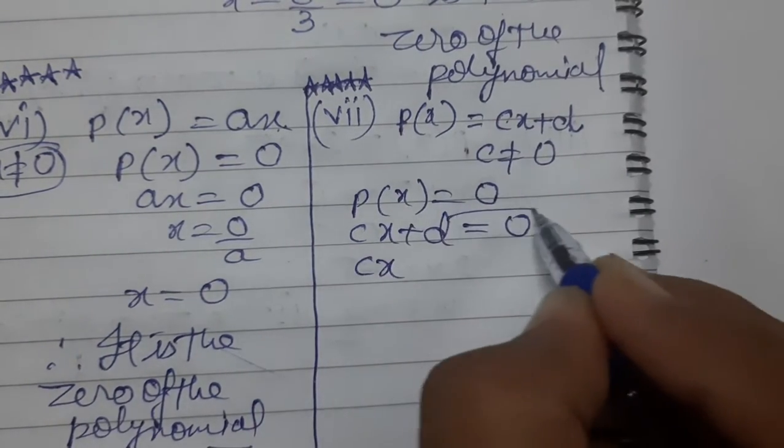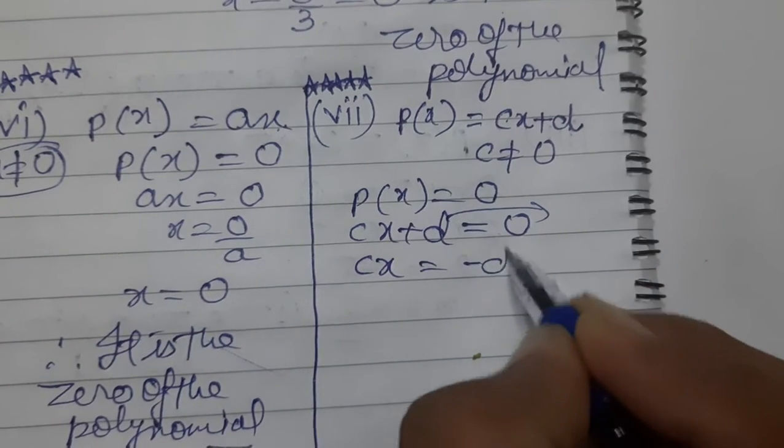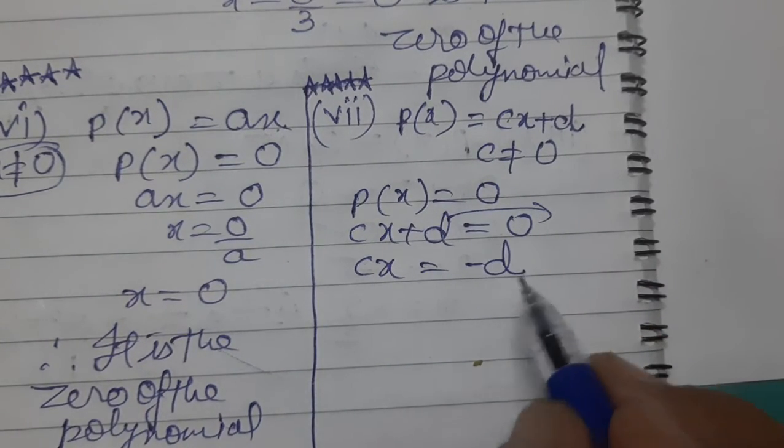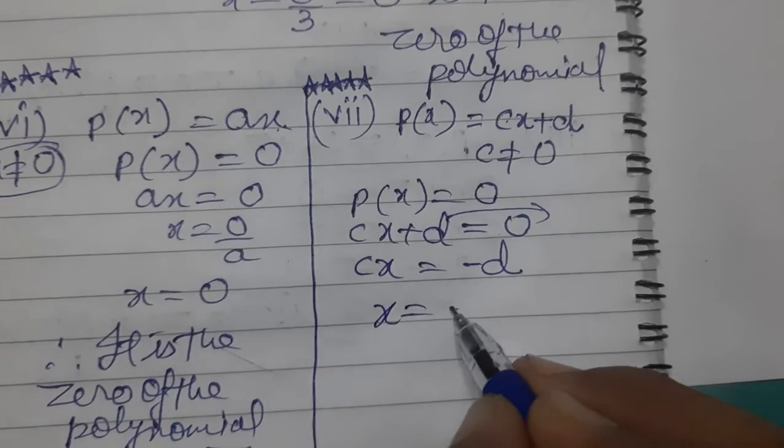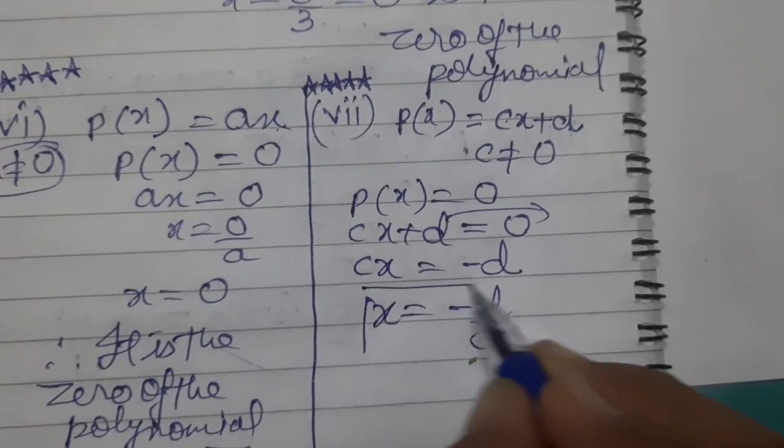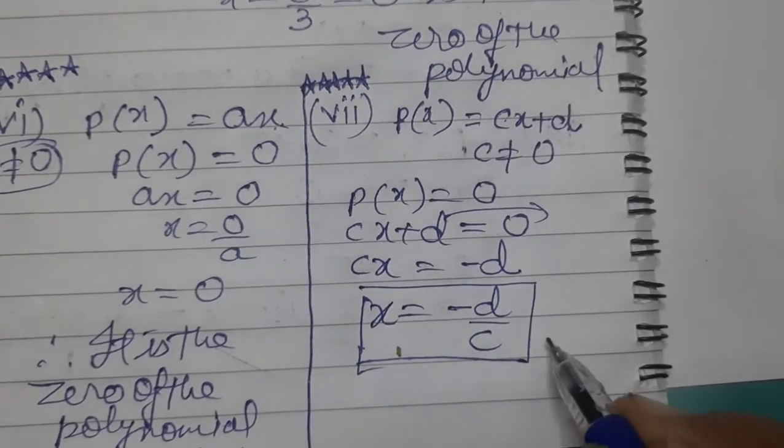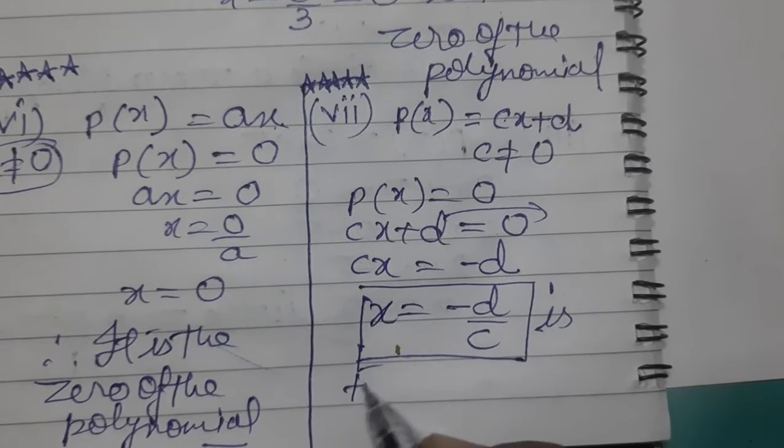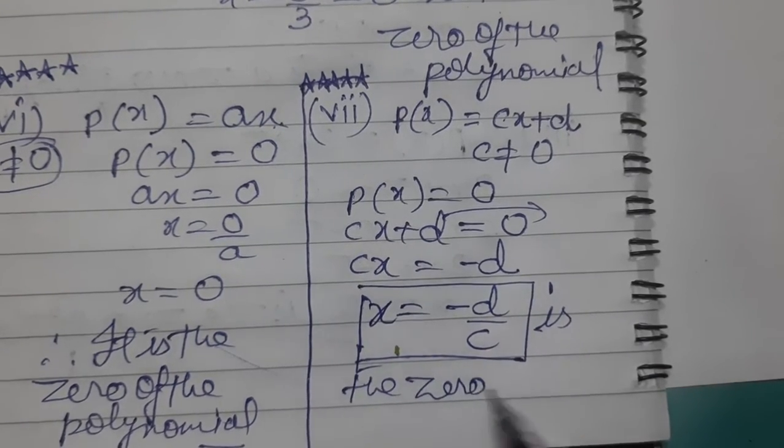When we transpose d to the other side, it becomes minus d equals cx. So x equals minus d by c. Very important question this was. Minus d by c is the zero of the polynomial.